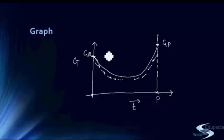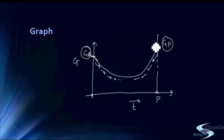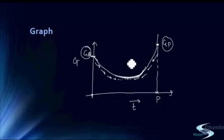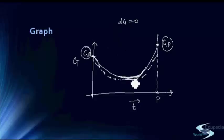The net Gibbs free energy for the complete reaction can be seen as G_P minus G_R. Depending on whether G_P or G_R is larger, delta G can have positive or negative values. At the minimum point on the curve, dG equals zero — Gibbs free energy is no longer changing. This is the position when equilibrium has been attained in your system.